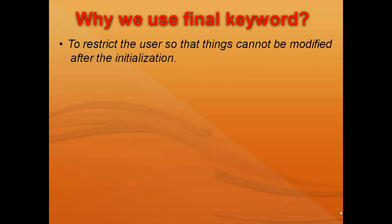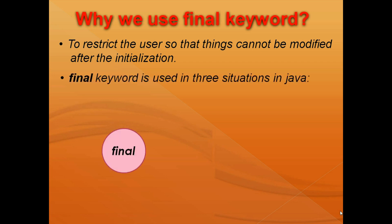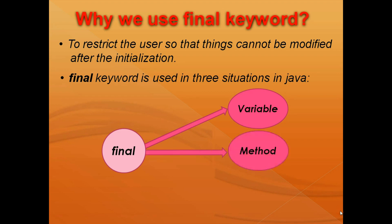So why do we use the final keyword? The final keyword in Java is used to restrict the user so that things cannot be modified after initialization. The final keyword is used in three situations in Java: one is to declare variables or constants, second is to make a final method, and third is to make final classes.